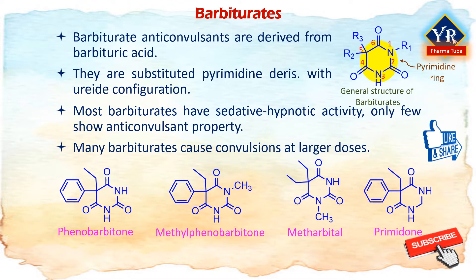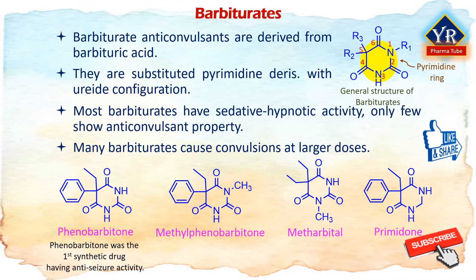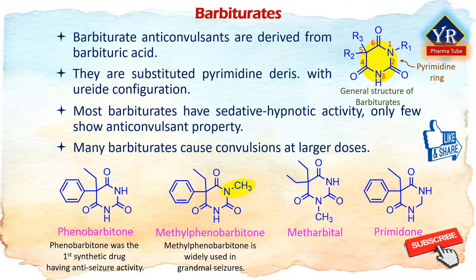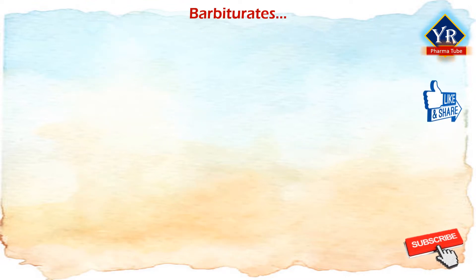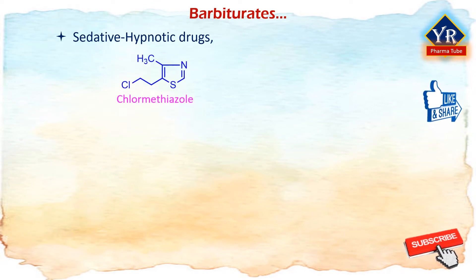Only phenobarbital and primidone remain in common use. Phenobarbitone was the first synthetic drug recognized as having anti-seizure activity and remains one of the most widely used anti-epileptic drugs. Its N-methyl homologue, methylphenobarbitone, is also an anti-epileptic drug. It is N-demethylated by the hepatic microsomal enzymes and most of its activity can be attributed to its conversion to phenobarbitone. Besides barbiturates, other sedative and hypnotic drugs such as chlormethazole, its edisylate salt and paraldehyde are also used in the treatment of epilepsy.